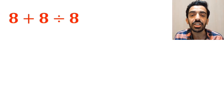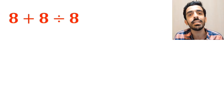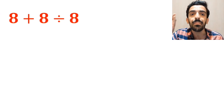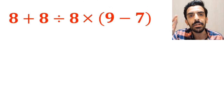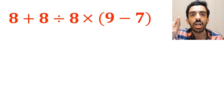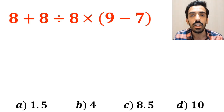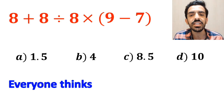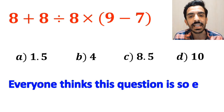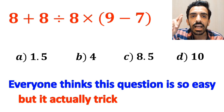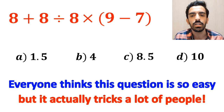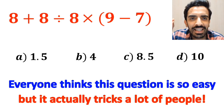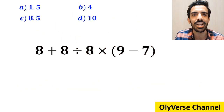What is the value of the expression 8 plus 8 divided by 8 then times open parenthesis 9 minus 7 close parenthesis? Which option do you think is the correct answer to this question? Everyone thinks this question is so easy but it actually tricks a lot of people. Let's take a closer look and solve it together.